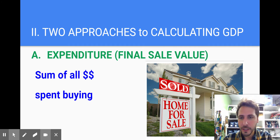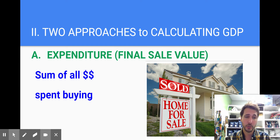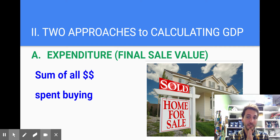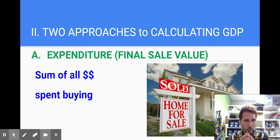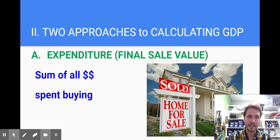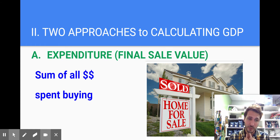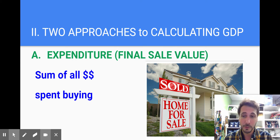So we have two approaches to calculating GDP. Approach number one is the expenditure approach. If you're thinking of your circular flow diagram, think of the expenditures that consumers or households make in the product market and expenditures that businesses make in the resource market. The other approach is the income approach — the income households make from selling their resources, the income businesses make from selling their products.